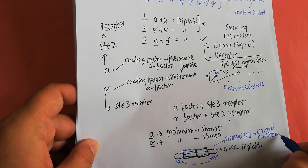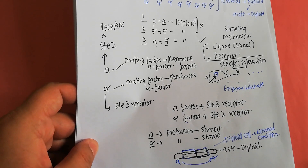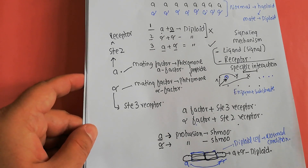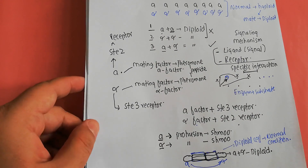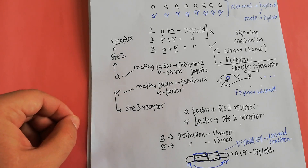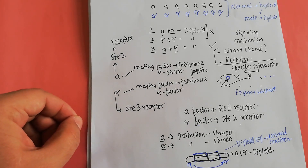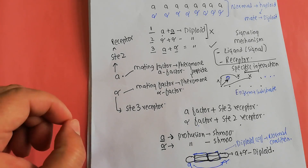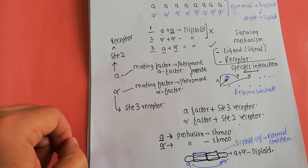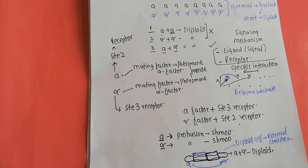This clarifies the situation where the alpha cell can only interact with the A cell, and the A cell can only interact with the alpha cell. If you liked this video, please subscribe to the channel to get more updates and more topics about biology.